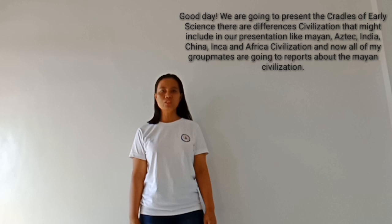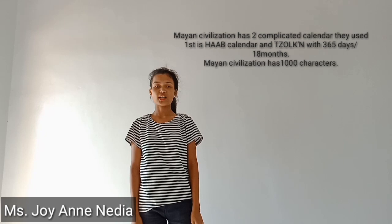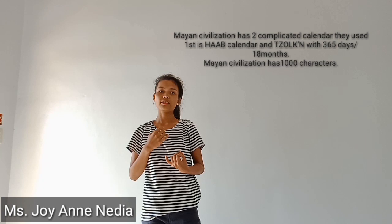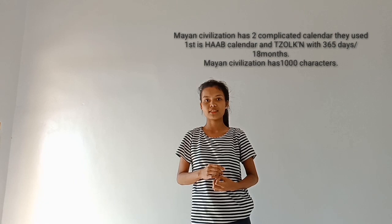All of my group mates are going to report about the Mayan Civilization. Mayan Civilization has two complicated calendars: the Haab calendar and the Tzolk'in, which are 365 days and 18 months.